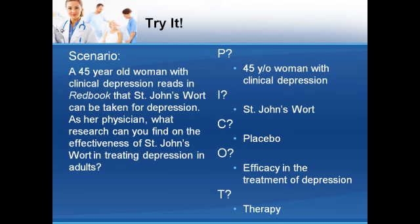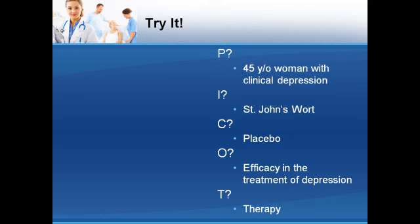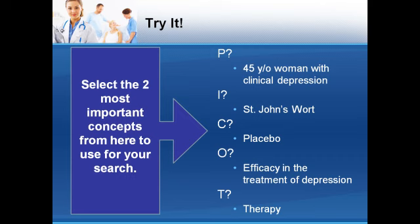Thus, our clinical question could be stated as follows: Is St. John's wort more effective than placebo in the treatment of clinical depression in adult women? The next step is to use PICO to pick out the important concepts for conducting the literature search. Remember the nachos from earlier? Treat your search terms like hot peppers — a little goes a long way, so start with the essentials and add more as needed. The intervention is usually the most helpful search term, followed by the comparison and the patient. The outcome is usually least helpful. Therefore, the concepts we will use are St. John's wort and clinical depression.